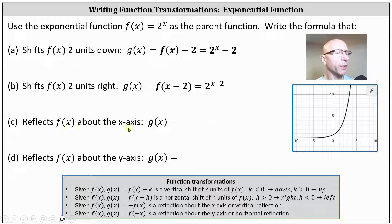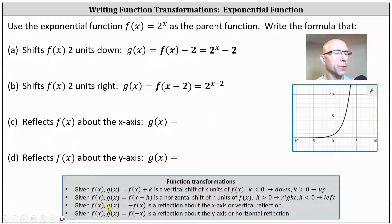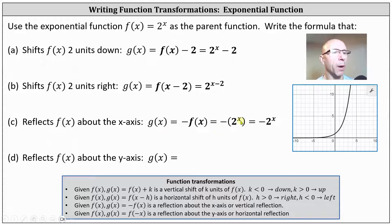Part C reflects f of x about the x-axis. If we reflect something across the x-axis, we need to change the signs of all the y-coordinates — recall y values are function values. Going back to our notes, given f of x, g of x equals the opposite of f of x is a reflection about the x-axis or vertical reflection. This indicates for C, we have g of x equals the opposite of f of x, indicating g of x equals the opposite of two to the power of x. Because we have a single term, we can remove the parentheses and simply write the opposite of two to the power of x.